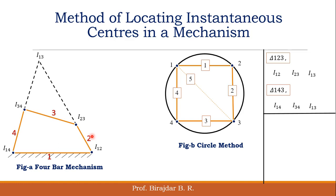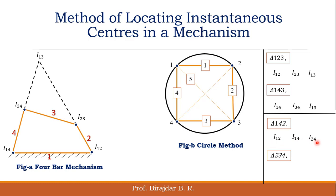Only one instantaneous center remains. We join the other diagonal 2-4, which again forms two triangles: triangle 1-4-2 and triangle 2-3-4. From triangle 1-4-2, instantaneous centers 1-2, 1-4, and 2-4 are the three sides. Instantaneous centers 1-2 and 1-4 lie on the same line, so the third, 2-4, must also lie on this line. We draw this line.